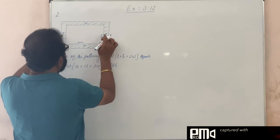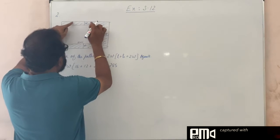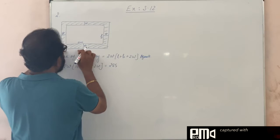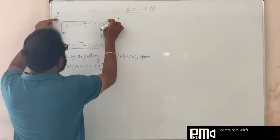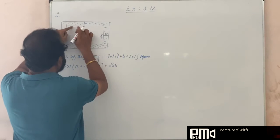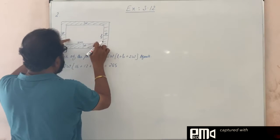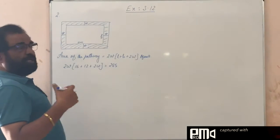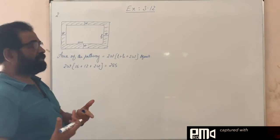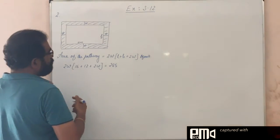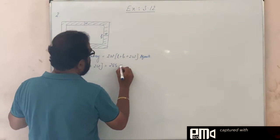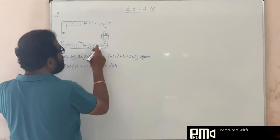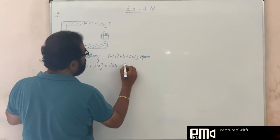We want only the pathway area. So from the full area of 285, we subtract the area of the inner rectangle — length into breadth, 16 into 12.